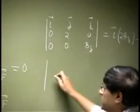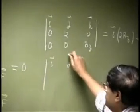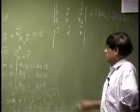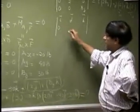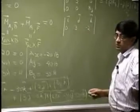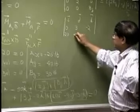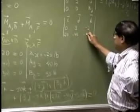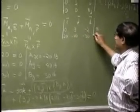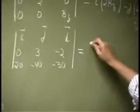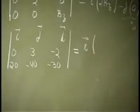Then we are looking at this. This is going to be another determinant. You have I, J and K. Then we get 0 for I. You have 3 minus 2. Then you have 20, negative 40 and negative 30.